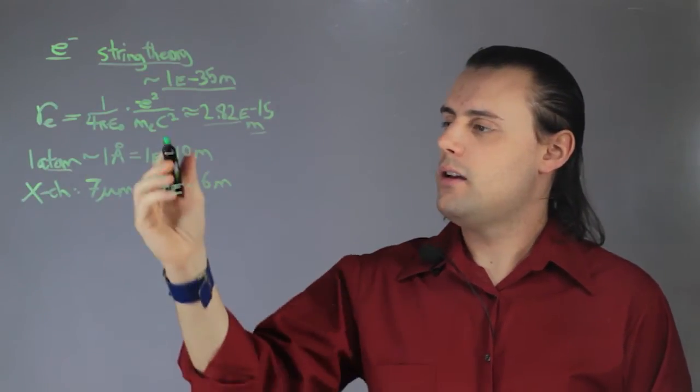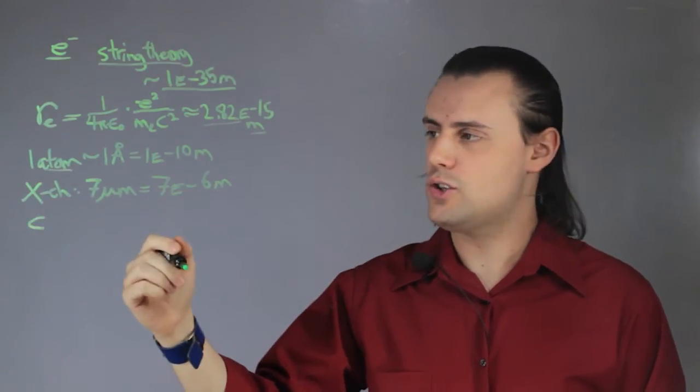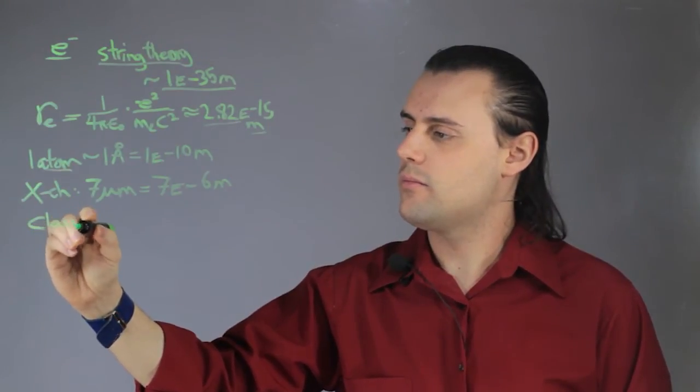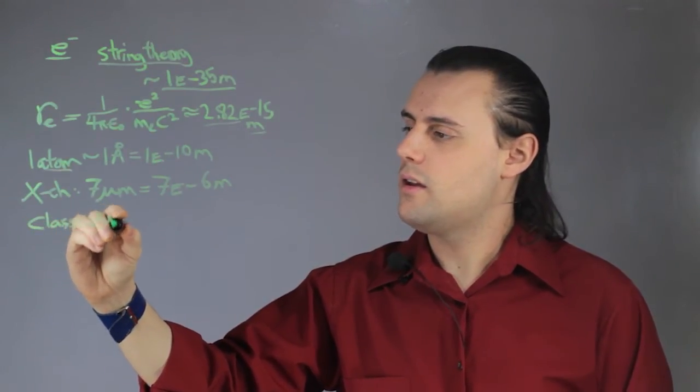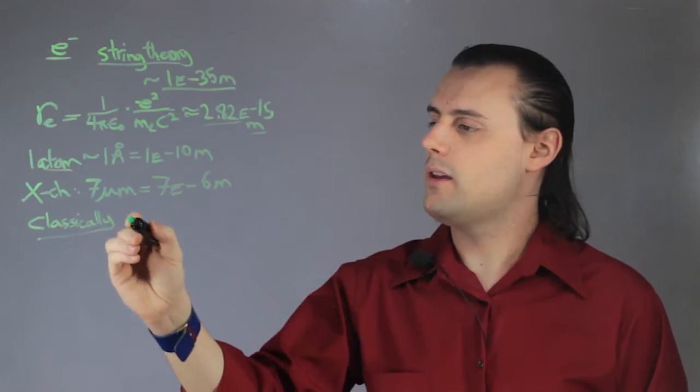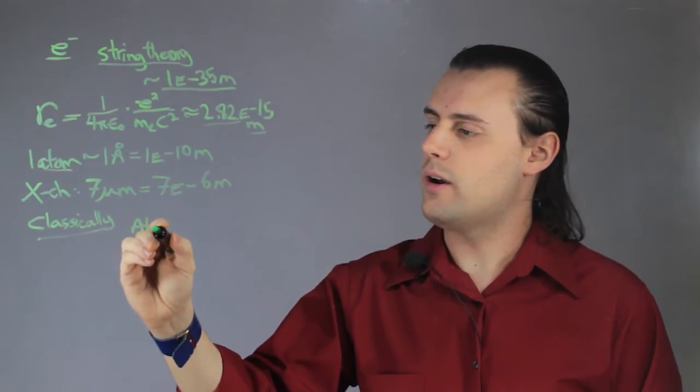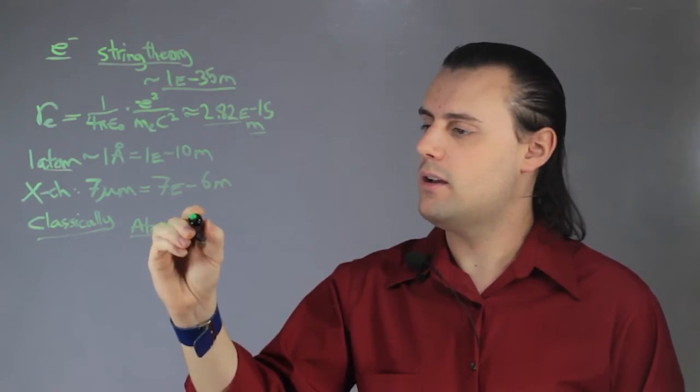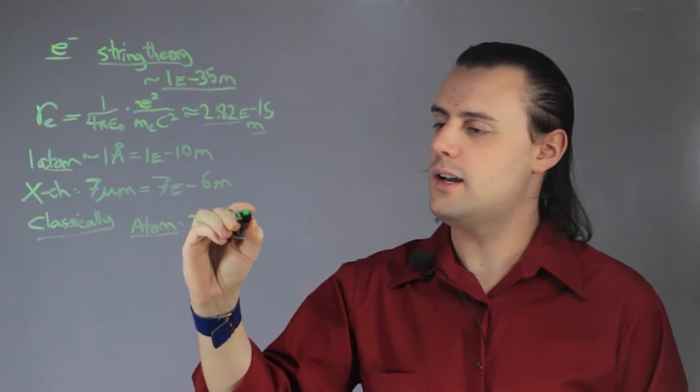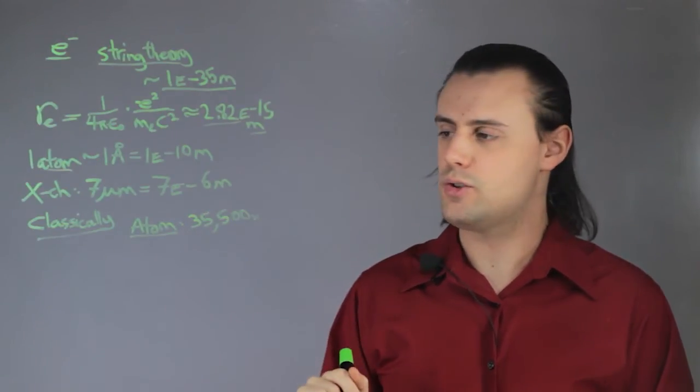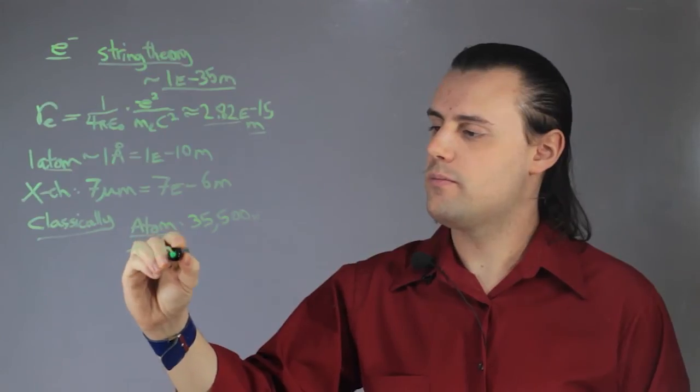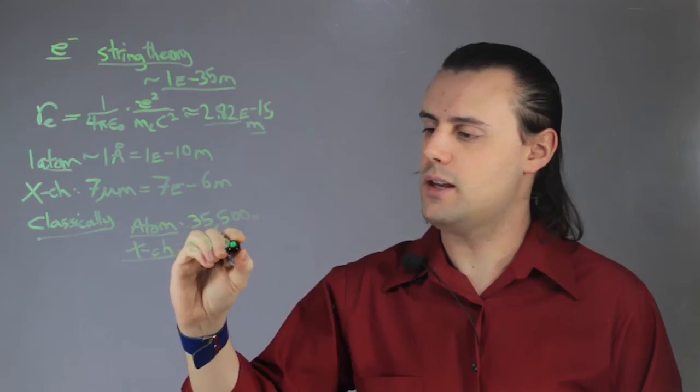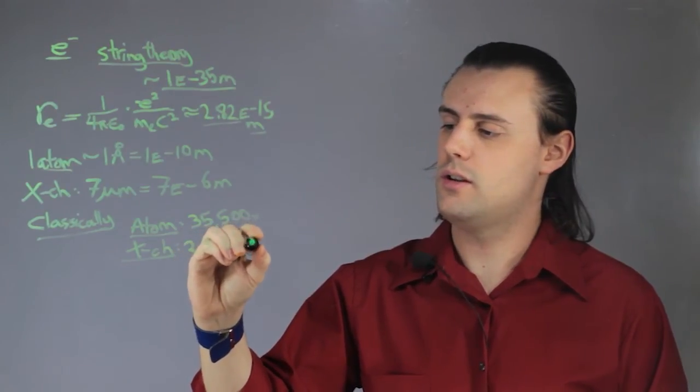So, if we're interested in comparing the size of an electron to an atom and an X chromosome classically, then we would use the classical radius. For an atom compared to an electron, the atom would be 35,500 times larger than the electron, whereas the X chromosome would be approximately 2.5 billion times larger than an electron.